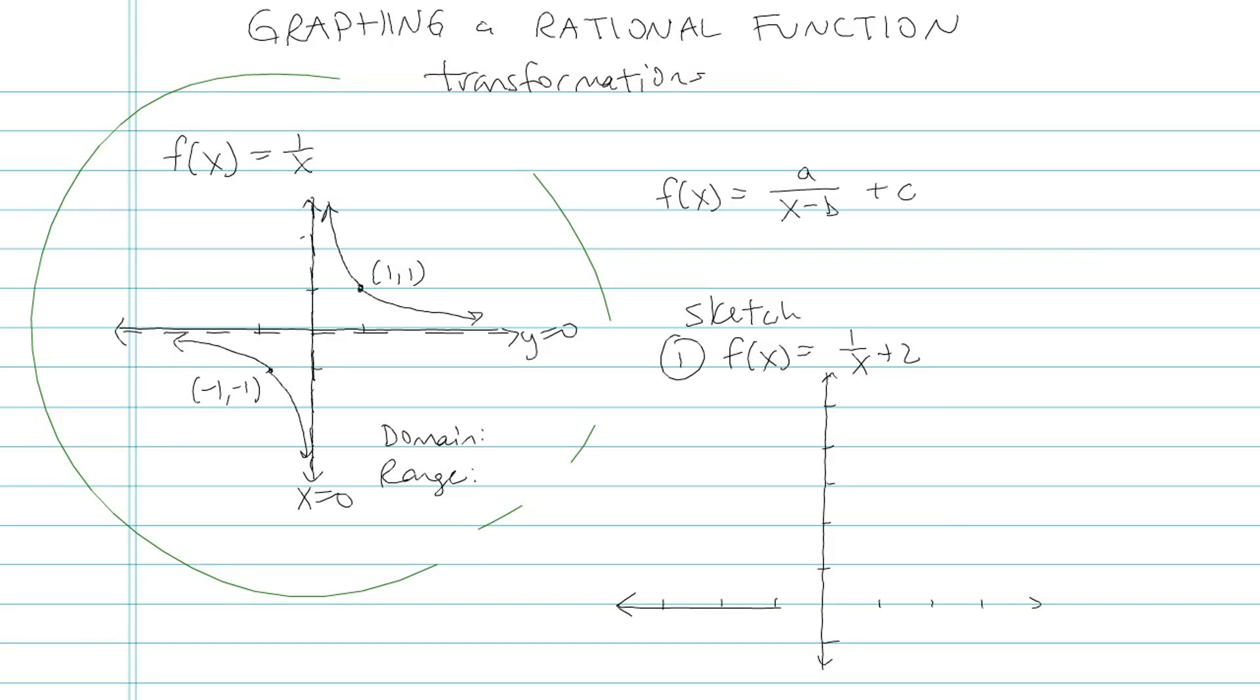And then the horizontal ones, sometimes you'll cross them, but the horizontal asymptotes represent output restrictions. Like you'll never get an output of 0 in this function either. So for the domain, we would say all reals except for x could not be 0. And then for range, we'd say all reals except for y could not be 0.